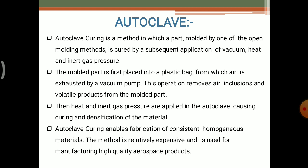First of all, we are going to explain the autoclave method, which is also known as the autoclave curing method. The autoclave method is a method in which a part or mold can be formed by one of the open molding methods. These can be imparted in a regular die, that is a split die, and this can be molded by one of the open molding methods using a split die method. This is cured by a subsequent application of vacuum, heat, and inert gas pressure. The molded part is first placed into a plastic bag from which air is exhausted by a vacuum pump.